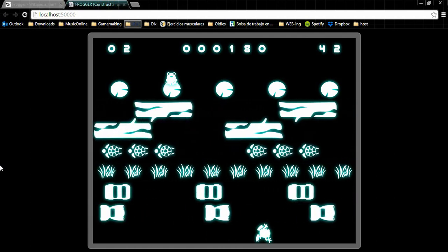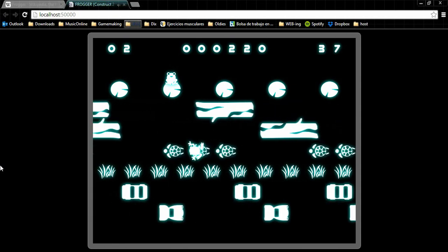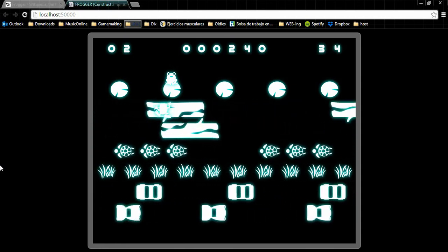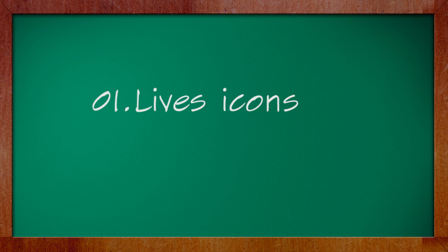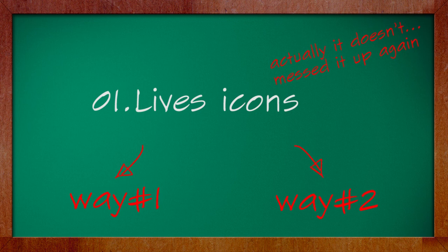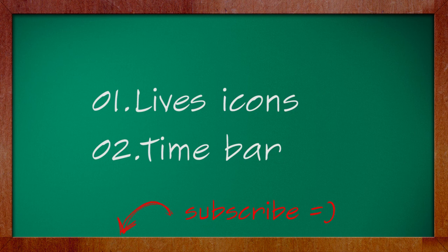So that's it — there you have the basic mechanics for our game, fully working and very close to the original. But if you've seen the previous series, you know there's a small challenge for you here. The game uses images to show the player's lives instead of numbers, and the game uses a time bar instead of numeric values, with the bar shrinking as time passes. So try to achieve that by yourself, or as always, just click here to see how we did it.